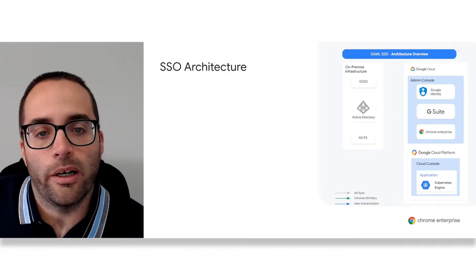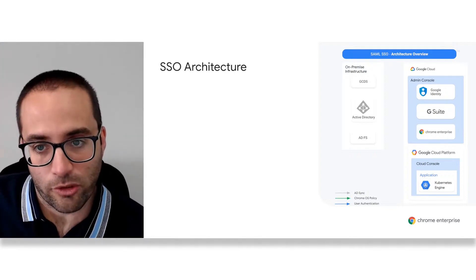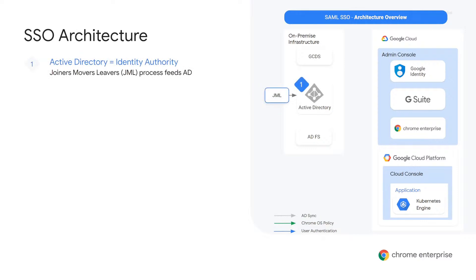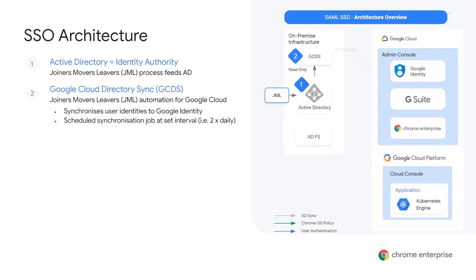Let's take a look at the SSO architecture. The diagram on the right of this slide shows the infrastructure. Everything on the left of the diagram is running on-premise at the customer's site; the right-hand side is Google infrastructure. In this example, we're using Active Directory as our identity authority, and Active Directory Federation Services would be our SAML IDP. We're also using Google Cloud Directory Sync to synchronize identities to Google Cloud. User credentials are managed in Active Directory, and all updates for joiners, movers, and leavers continue to be managed there. Google Cloud Directory Sync is configured to synchronize any changes made in AD to Google Cloud Identity — this is a one-way sync from Active Directory to Google, so GCDS never writes anything to Active Directory. Steps one and two are actually the same whether you're planning to use Google Cloud Identity or implementing SAML single sign-on.